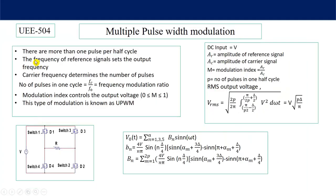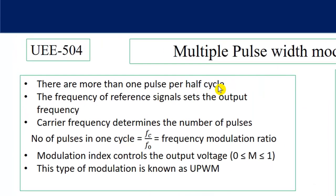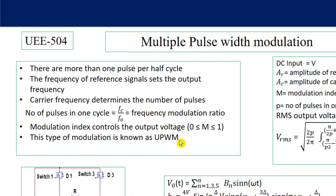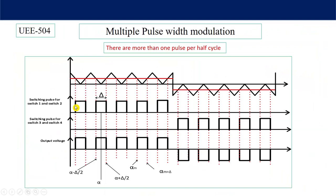There are more than one pulse per half cycle. The frequency of the reference signal sets the output voltage frequency. Carrier frequency determines the number of pulses. The number of pulses in one cycle equals the carrier frequency divided by the reference frequency, which is known as the frequency modulation ratio. Modulation index controls the output voltage, as discussed in detail last class. This type of modulation is known as uniform pulse width modulation, because all pulses are of uniform width.